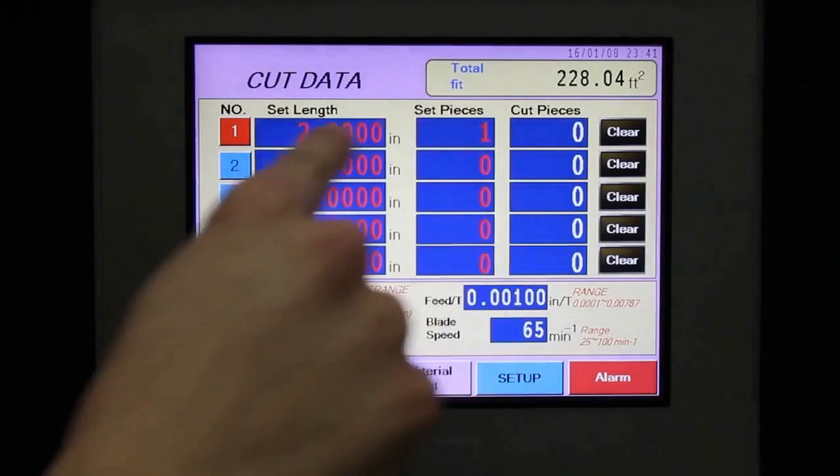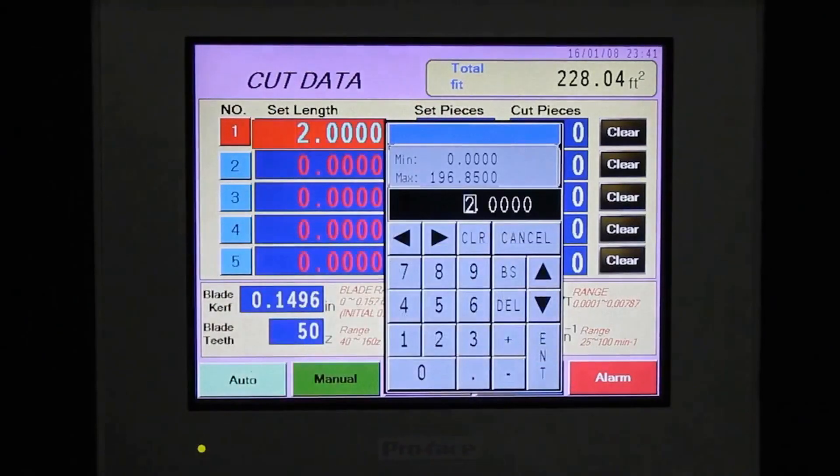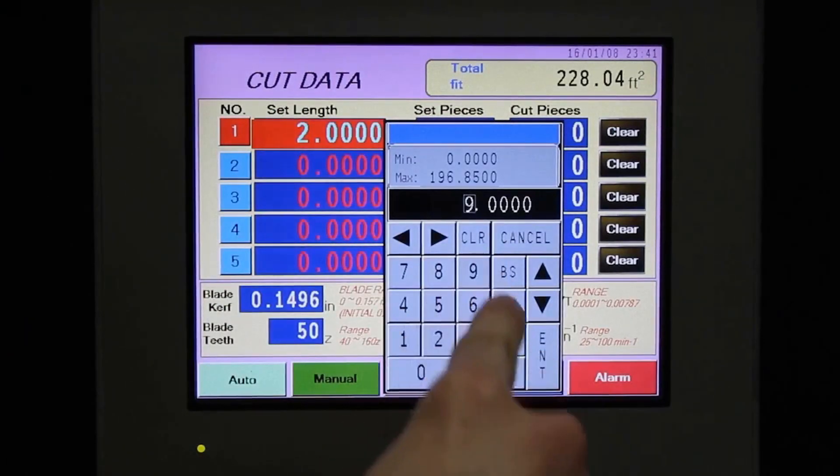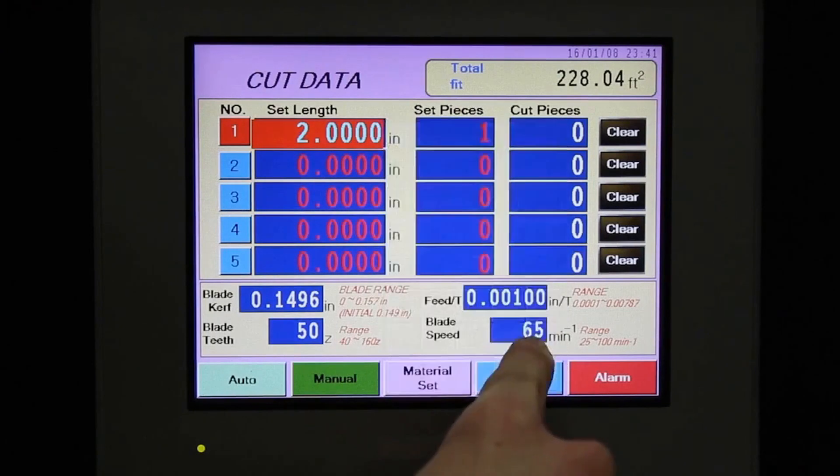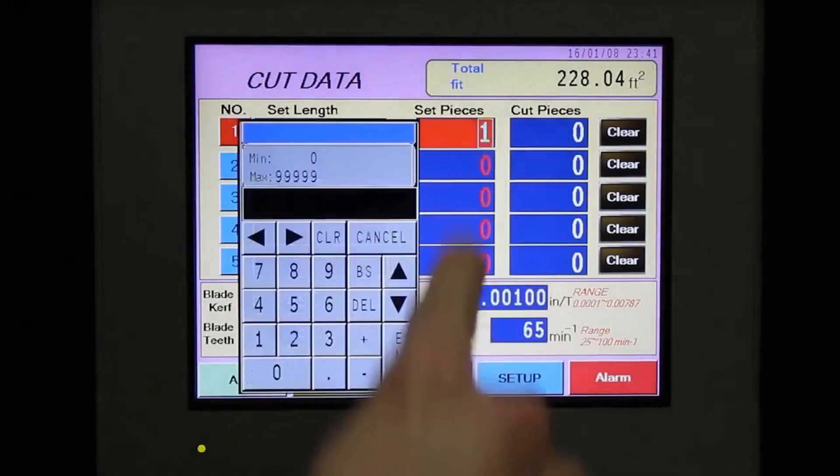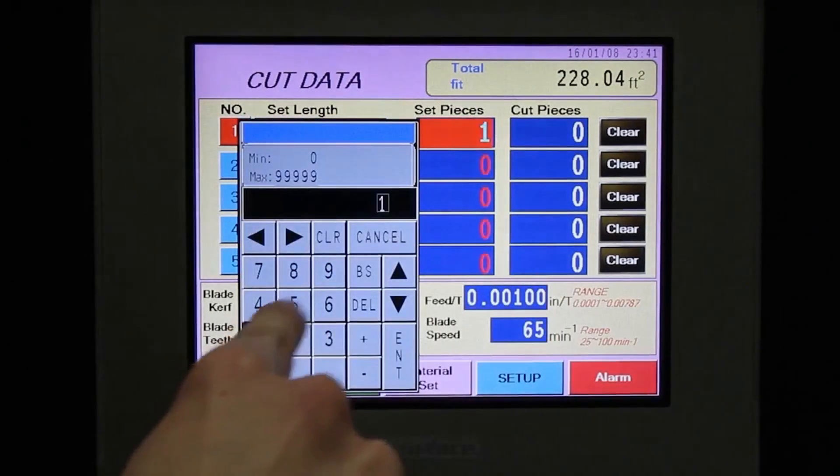Programming the CMB230 is fast and simple. To program a production run, enter the length of material desired and the number of pieces to be cut. Additional cuts can also be entered for continuous processing.